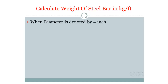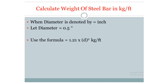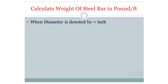To calculate weight in kg per feet when diameter is in inches: let diameter equals 0.5 inch. Use the formula: weight equals 1.2 multiplied by D squared. Input the value D equals 0.5, and the result is 0.30 kg per feet.